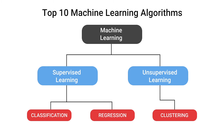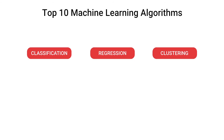If you want to classify something — like if you've applied for a credit card and want to know the status of it, whether it is accepted or rejected — you'll be looking at classification algorithms. Classification algorithms help you to differentiate one group from the rest of the observations.